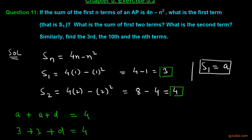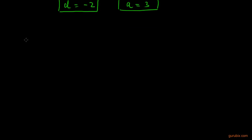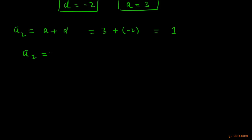So we can find all the desired terms. We have to find the second term, A2. A2 = A + D = 3 + (-2) = 1. So the second term is 1.